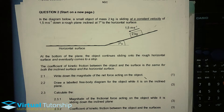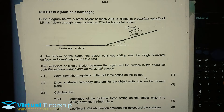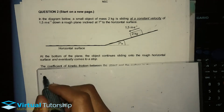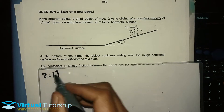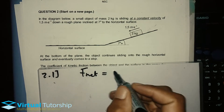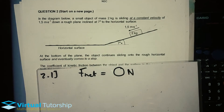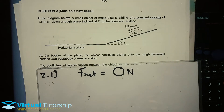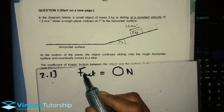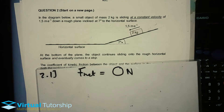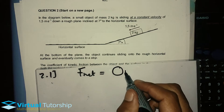2.1: Write down the magnitude of the net force acting on the object. The answer for 2.1 is F_net is equal to 0 newtons. Why? Because the object moves at a constant velocity, and according to Newton's first law, if an object is traveling at a constant velocity, the sum of the external forces acting on that object must equal zero.